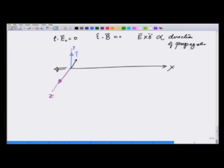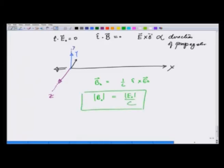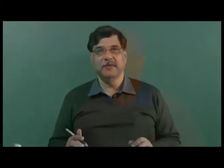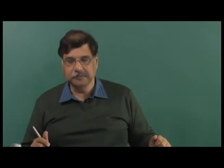Finally, we have B₀ = (1/c) î × E₀, which means the magnitude of B equals the magnitude of E divided by c — smaller than E by the factor of the speed of light, 3 × 10⁸ m/s. So the magnetic field in an electromagnetic wave is much smaller than the electric field when measured in SI units.